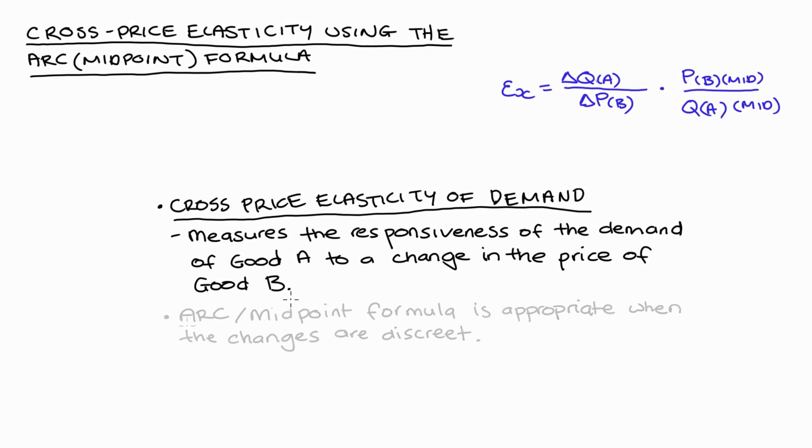The arc or midpoint formula is appropriate when the changes are discrete in nature. So I've actually just rewritten the formula here. So epsilon x is our cross-price elasticity of demand.